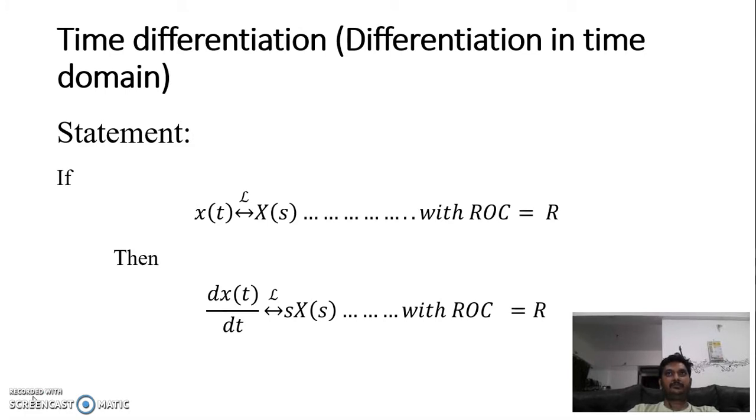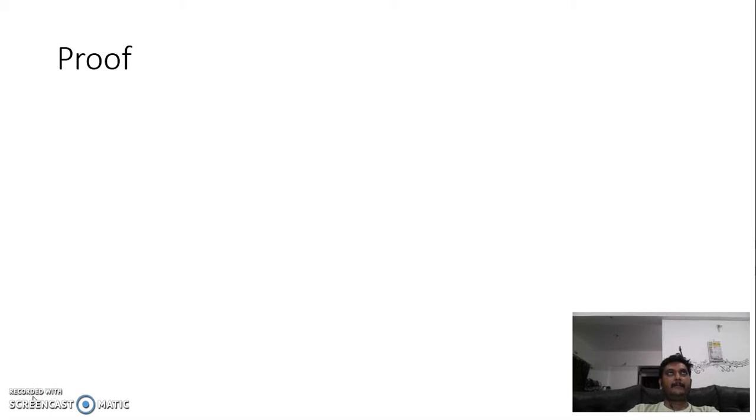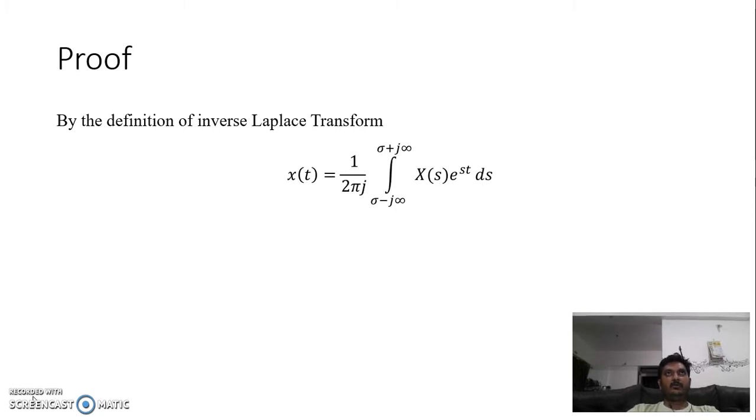Let's look at the proof. We know the definition of inverse Laplace transform, which states that X(t) is equal to 1 upon 2πj, integration from σ minus j∞ to